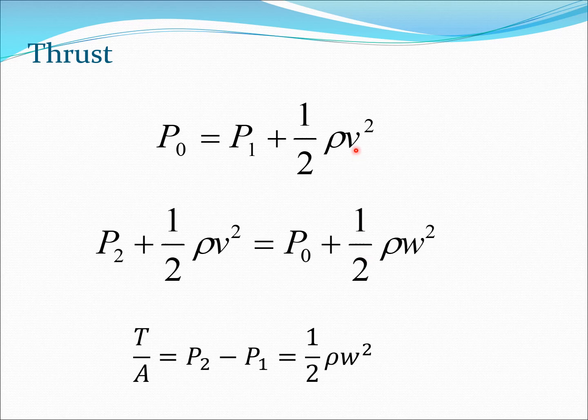So we collect these two equations here which we have obtained from the Bernoulli's theorem or Bernoulli's formula. Now what we are going to do is use the fact that T/A = p2 - p1. That comes from the basic definition of pressure. The difference in pressure across the rotor disk is going to be the thrust divided by the cross section πr².